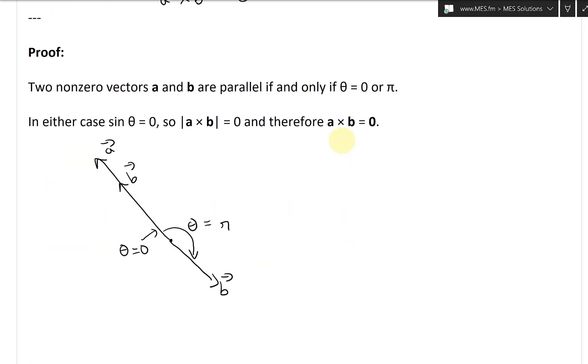So what we get is A cross B equals length of A times length of B times sine zero or π, and either way it's going to equal zero. This whole thing has become zero. It just becomes, for completeness, length of A times length of B times zero, which equals zero.